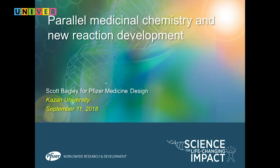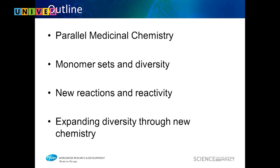I'll make this short. Parallel medicinal chemistry is making many compounds all at the same time from a template. I'll show you what I mean by template — you react different monomers onto that template. The monomer sets are things like aryl bromides, alkyl bromides, aryl iodides, heterocycles — things we use as these monomers.